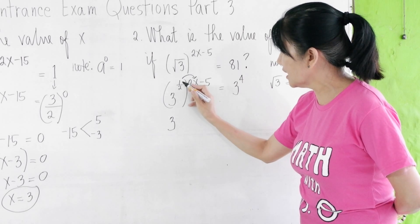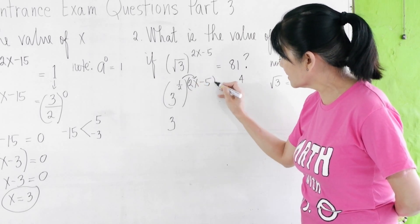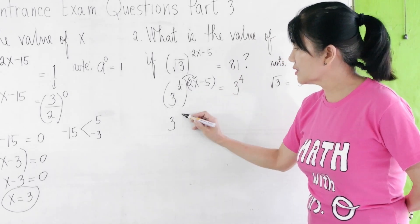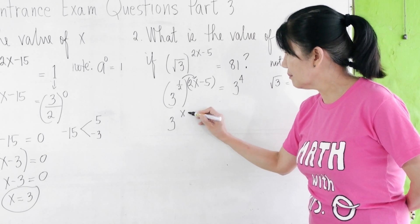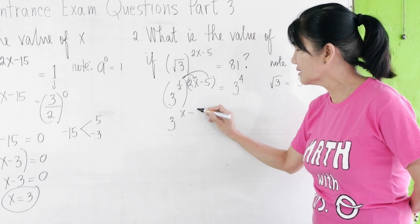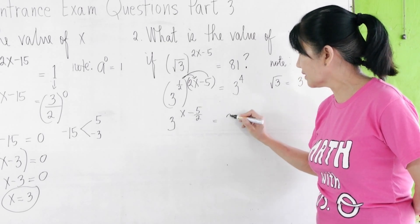1/2 times 2x - we can put a parenthesis here so you will not get confused - 1/2 times 2x is x, minus 1/2 times negative 5 is 5/2. This equals 3^4.